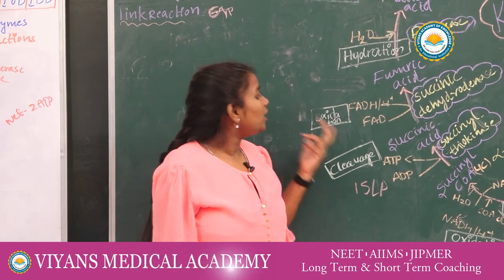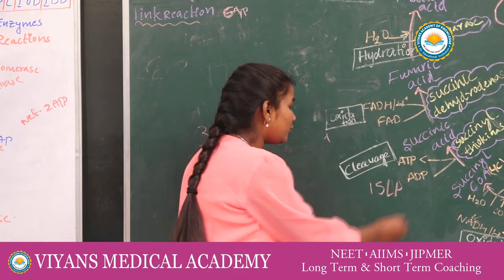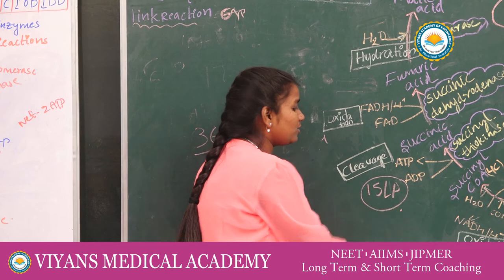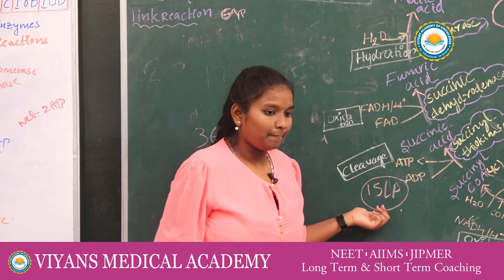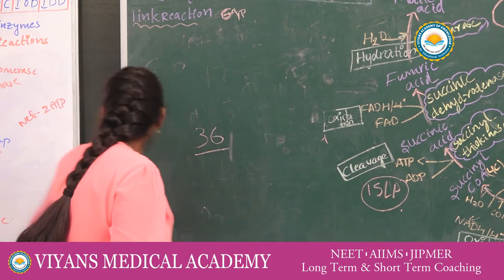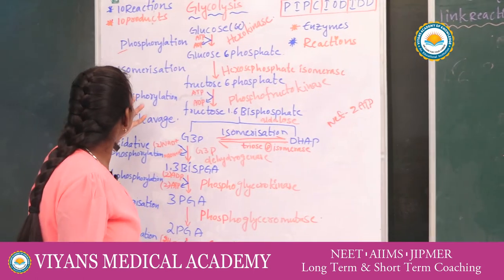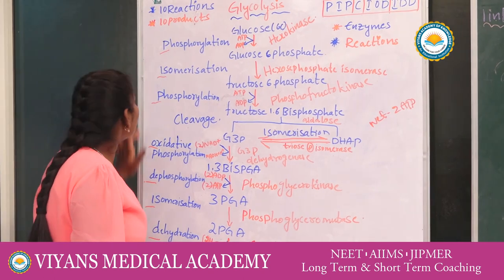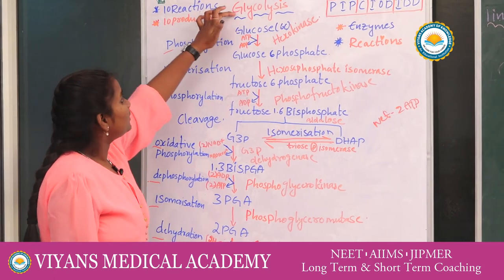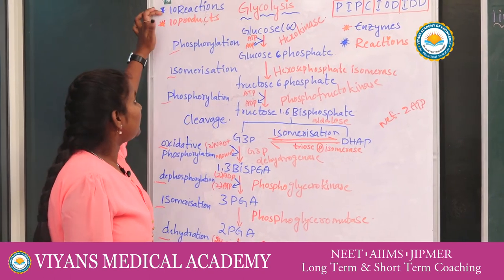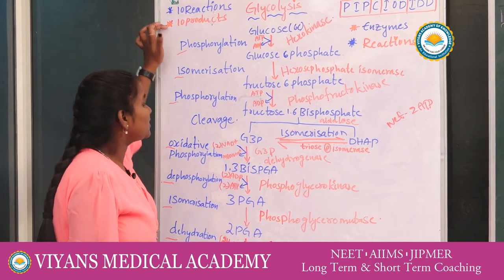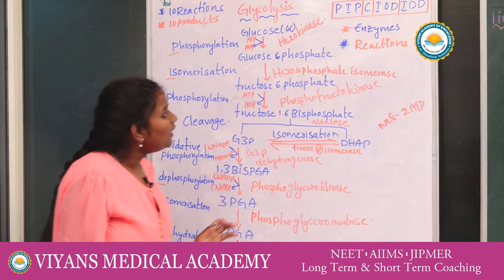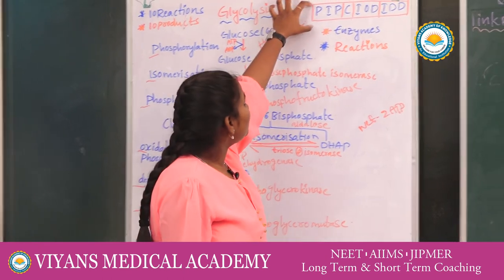Friends, here is a very important point about glycolysis. These enzymes are very important. In glycolysis, there are 10 reactions, 10 products, 10 enzymes, and 10 substrates. This is a main point to remember.